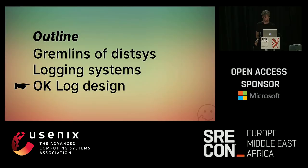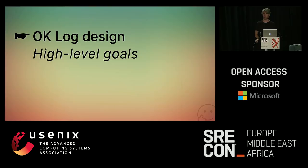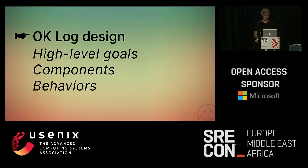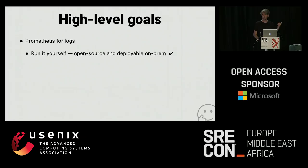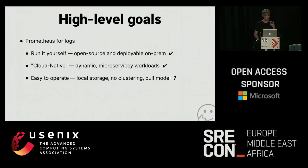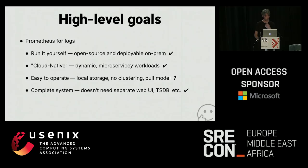That brings us to the design, split into three parts: high-level goals, component model, and behavioral model. The high-level goals: run it yourself — easy to satisfy. Cloud native — we can build something for that. Easy to operate, although the concrete lessons of Prometheus don't map very cleanly to the logging space. Complete system — we can satisfy that for perhaps a reduced definition of complete. Let's say we satisfy 80% of use cases, because a lot of people have strong opinions about logging.